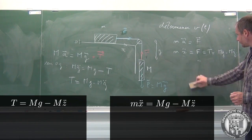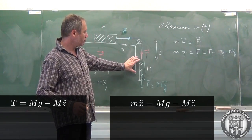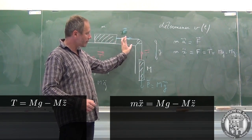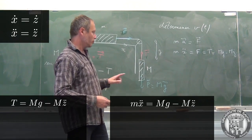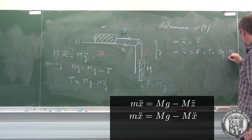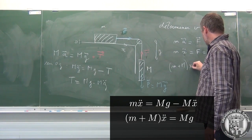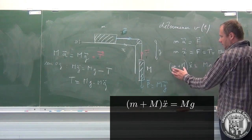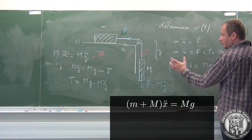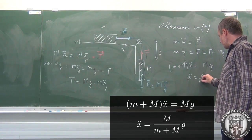Du coup, ça change toute la suite. Ici, on a ẍ ici, on a z̈. Je vous rappelle que, comme le fil n'est pas extensible, à chaque fois que lui descend d'une certaine longueur, lui bouge de la même longueur ici, c'est-à-dire que les déplacements sont égaux. Donc les vitesses suivant x et suivant z sont égales, et donc les accélérations aussi. Donc ẍ = z̈. Donc je vais le remplacer par Mẍ, et je vais le passer de l'autre côté de l'équation, et ça donne (M + m)ẍ = Mg.